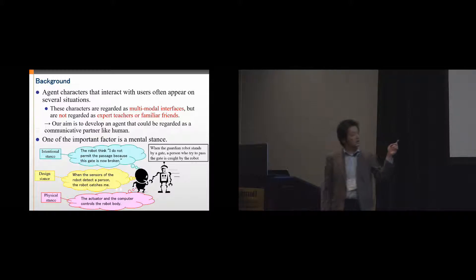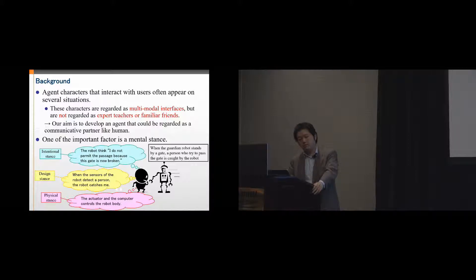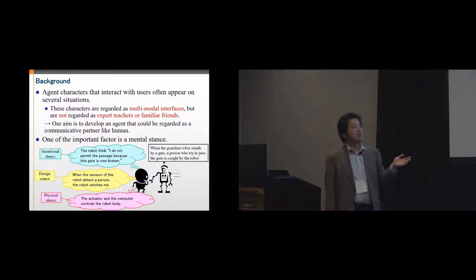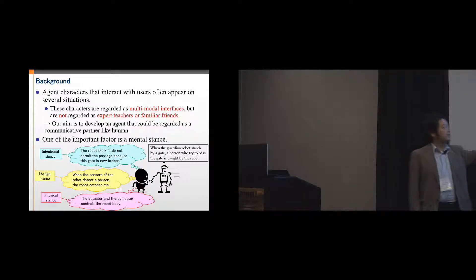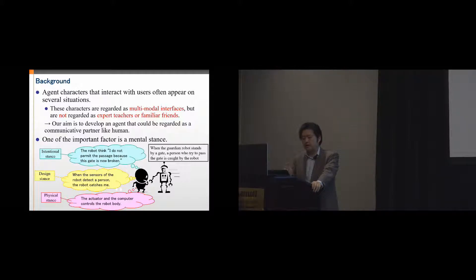Here is an example of the physical stance, design stance, and intentional stance. When we take a design stance, we expect that an interaction pattern works mechanically according to predefined rules. When a human interacts with a machine or agent, they usually take the design stance. For example, when a guardian robot stands by a gate, a person who tries to pass thinks: when the sensor of the robot detects a person, the robot catches me.